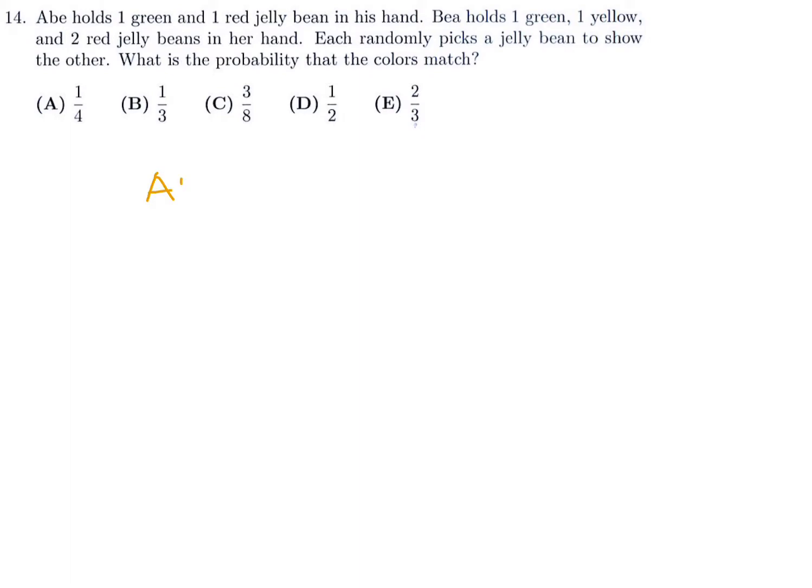Abe holds one green and one red jelly bean. B holds one green, one yellow, and two red jelly beans in her hand. Each randomly picks a jelly bean to show the other. What is the probability that the colors match? So Abe has one green and one red, and then B has one green, one yellow, and she has two red jelly beans. When we want these to match. Let's talk about it. Abe, if he picks one at random, let's say he picks the green. If he picks the green, there's one half chance he can pick a green. He has only two. So choosing a green out of two, there's one half chance.